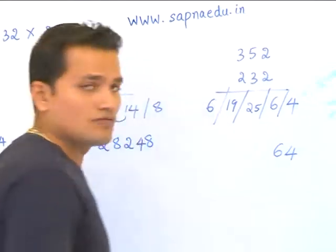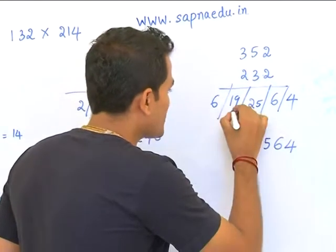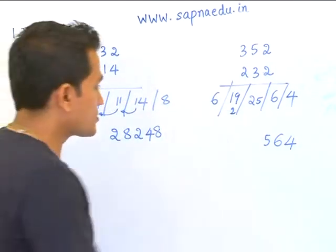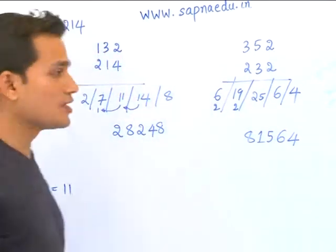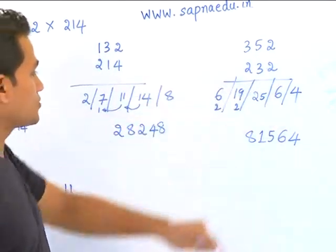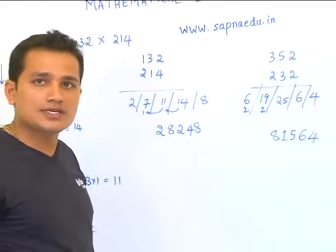So what's the final answer? 6, 19, 15, 46, 16. 6 carry forward. 19 plus 4 is 21. 1 carry forward. 15 plus 2 is 17. So 352 into 238 is 81564. Easy.